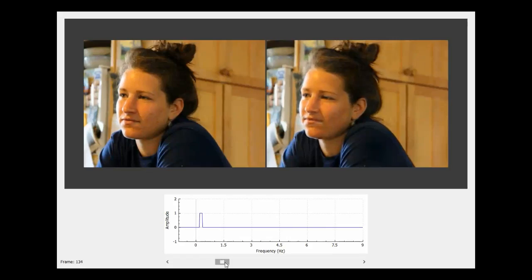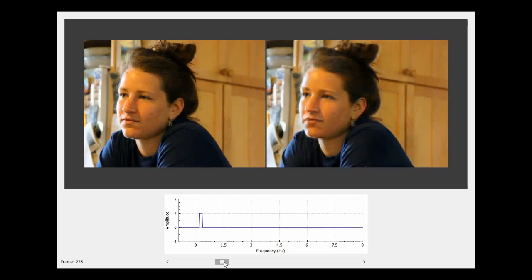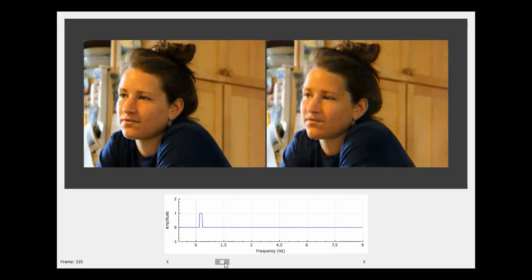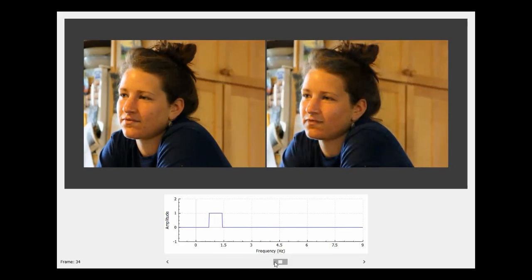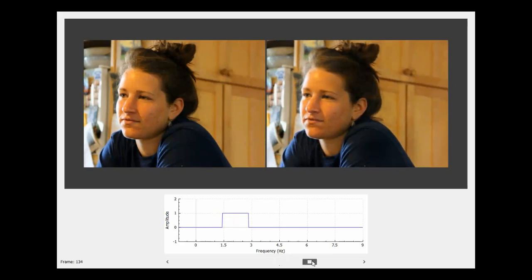A user can use an interface we created to sweep through the temporal frequencies of a video. For this video, the motions of the shoulder and chest are most visible at the lower frequencies. As the frequency is increased, the motions of the head become visible. And finally, at the highest frequencies, only the motion of the eye is visible.